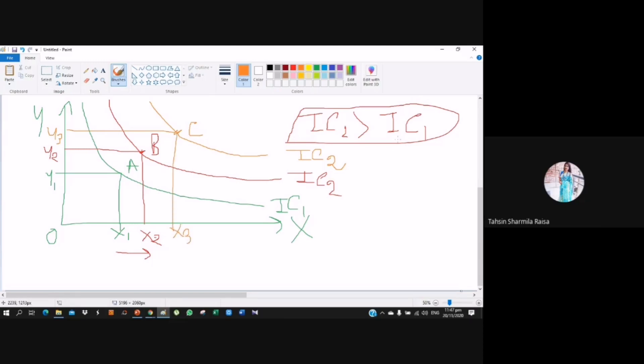IC2 is greater than IC1, so Y3 greater than Y2 greater than Y1, and X3 greater than X2 greater than X1. So we can say IC1 is lower than IC2, IC2 is lower than IC3. This is called the indifference curve map.